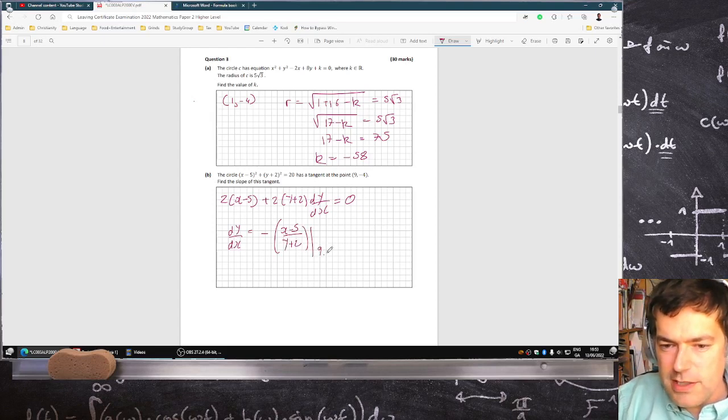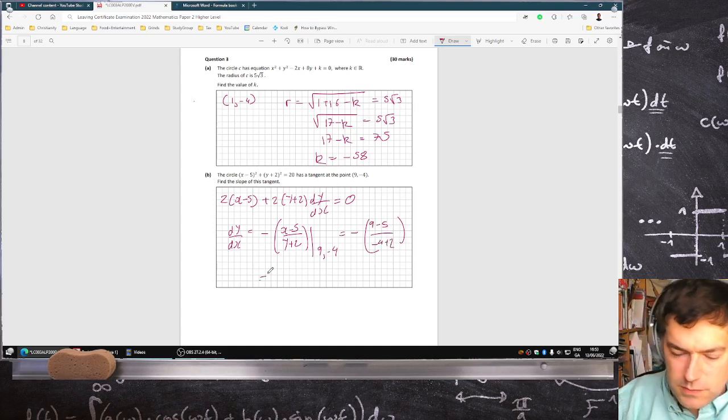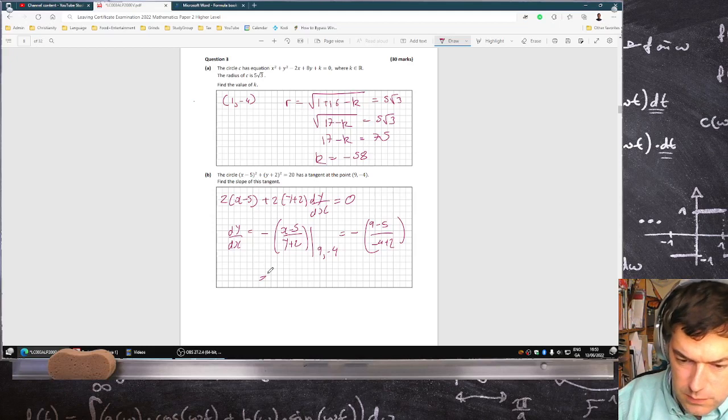So then at the point 9 and minus 4, that would be minus 9 minus 5 over minus 4 plus 2, which is 2.